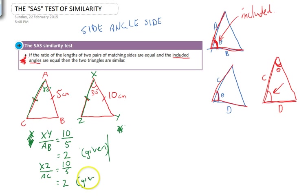XZ over AC is again equal to 10 over 5, which is equal to 2. And again that was given to us by telling us those numbers. Now let's look at what our SAS test is. If the ratio of the lengths of two pairs of matching sides are equal.